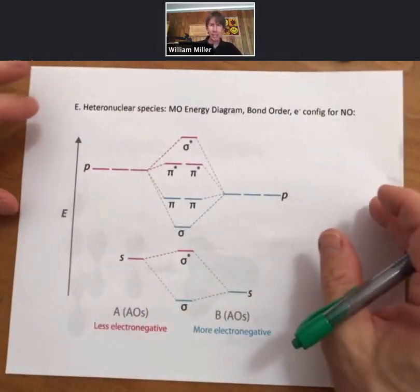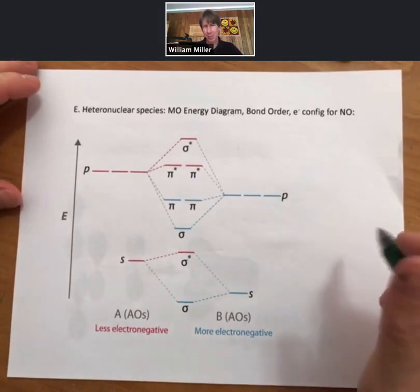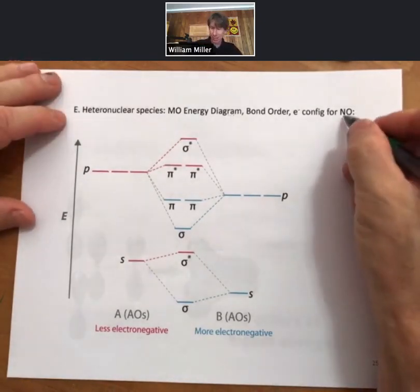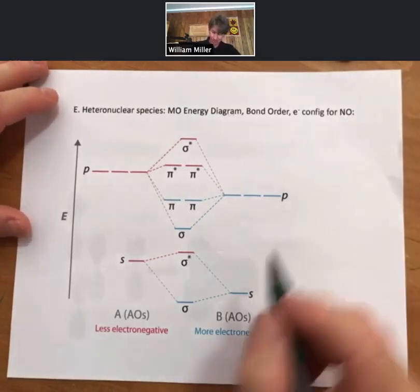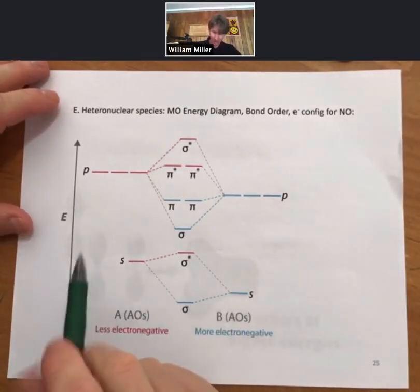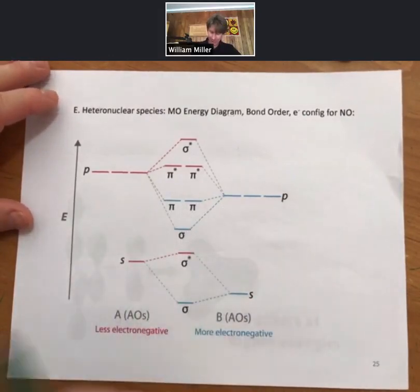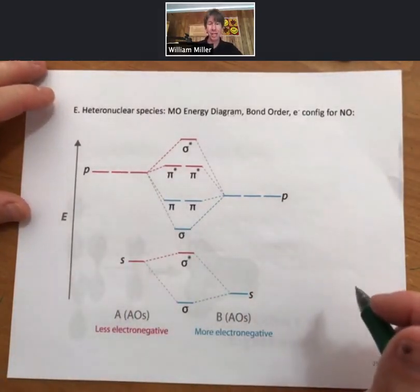One last thing. We said you could have two atoms, but the atoms have always been the same up until this point. Now we'll make them different atoms. These are going to be for nitrogen monoxide. For this, you can see that the s's and p's are at different levels.